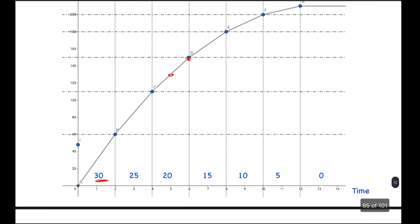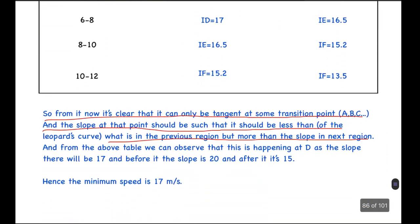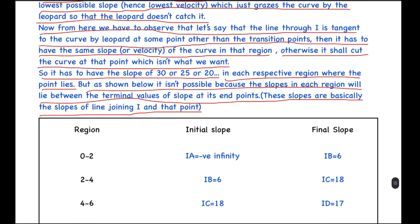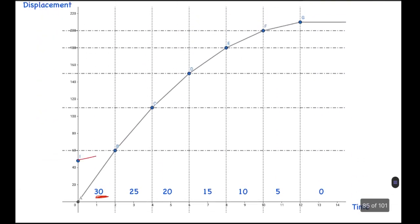So basically, what I'm saying here is that let's say we chose some transition point. For this to be tangent, the slope of this tangent should be less than the slope in the region below it and should be greater than the slope of the region above. This is very intuitive and it's very clear, and I hope you can understand that. So from here, we can see that if the line IB has to be a tangent, the slope should be between 30 to 25. So if it had to be a tangent at IC, it would have to be between 25 to 20, and so on.